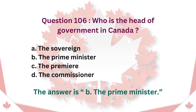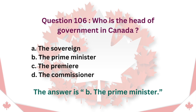Question 106: Who is the head of government in Canada? A. The sovereign. B. The prime minister. C. The premier. D. The commissioner. The answer is B. The prime minister.